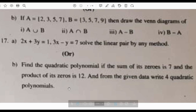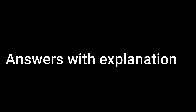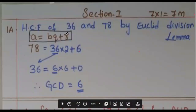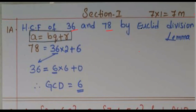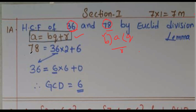Now let us discuss the answers for Section 1. Question 1: Find the GCD of 36 and 78 by Euclid's Division Lemma. Euclid's Division Lemma states A equals BQ plus R, where A is the dividend, B is the divisor, Q is the quotient, and R is the remainder.